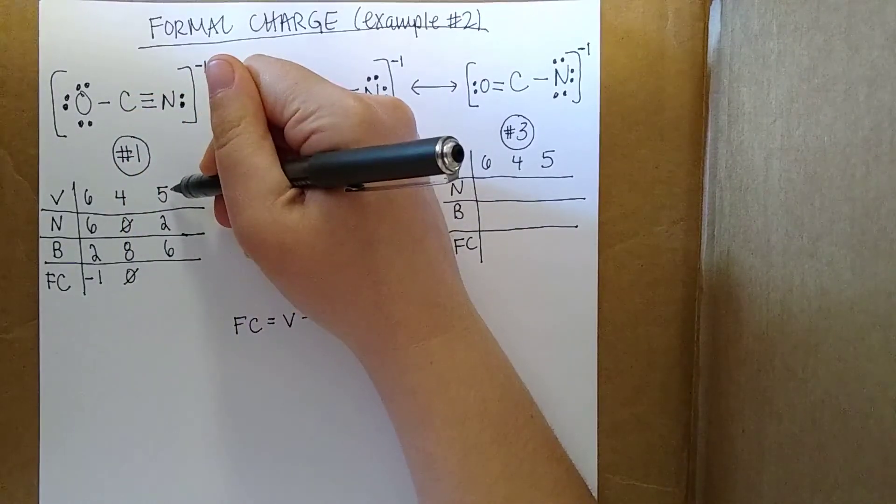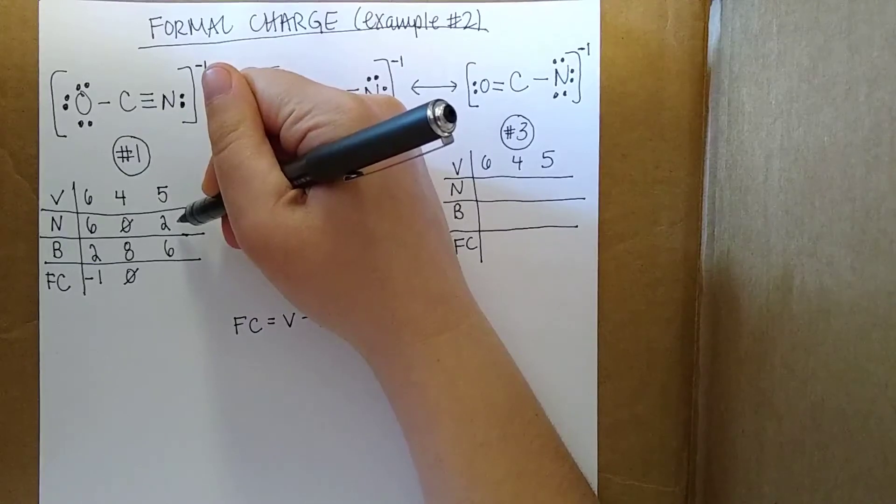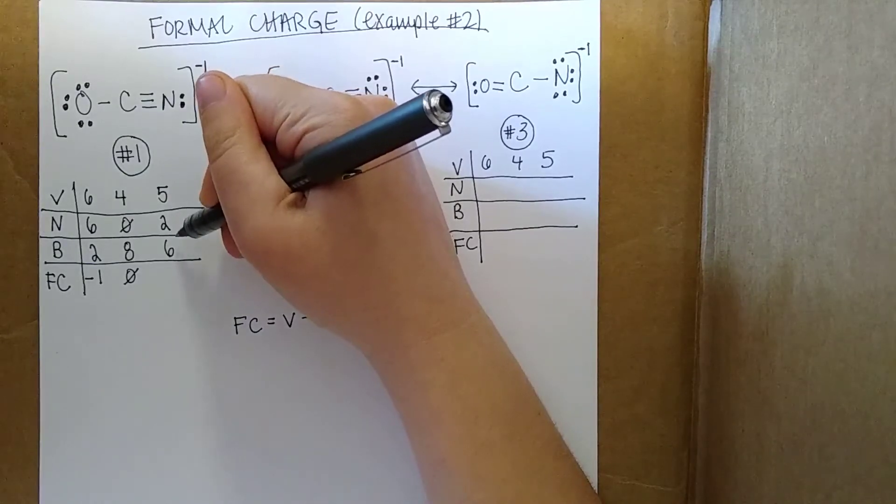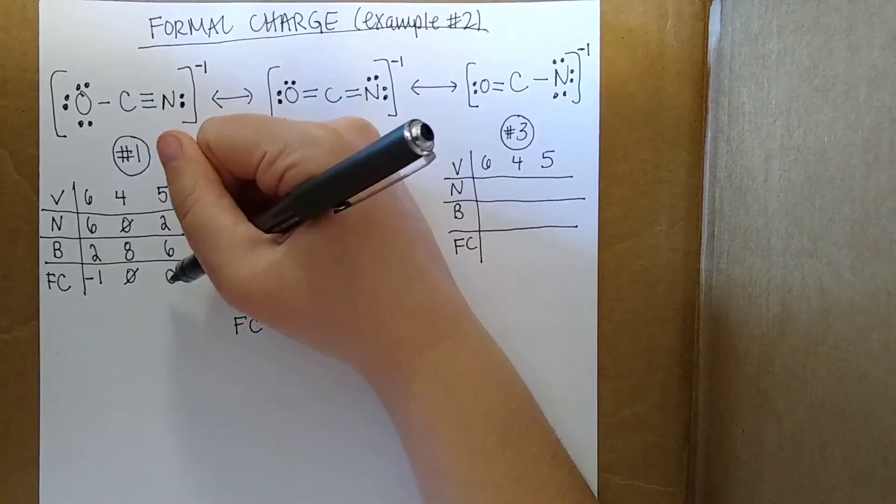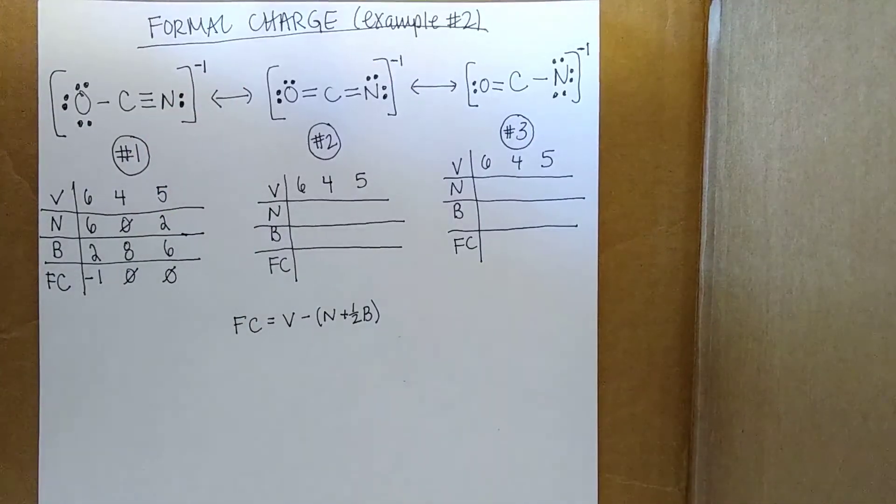And then for this guy, we have 5 minus 2, which is 3, and then minus another 3. So that gives us 0.